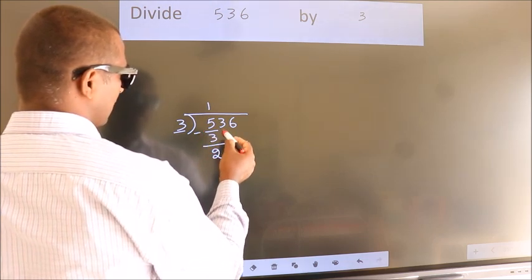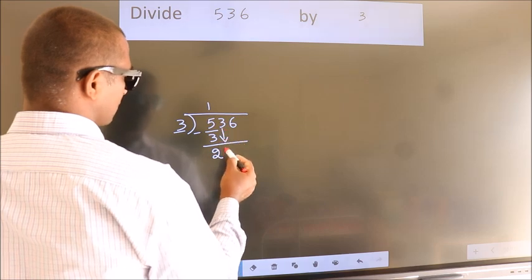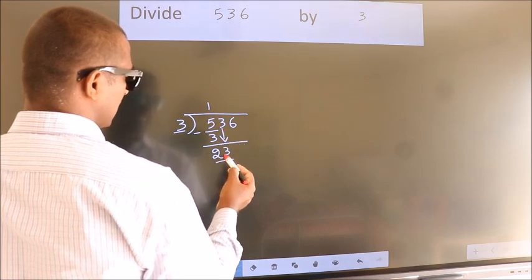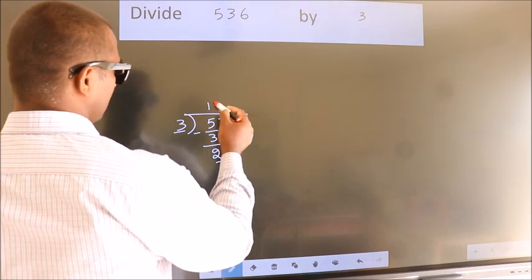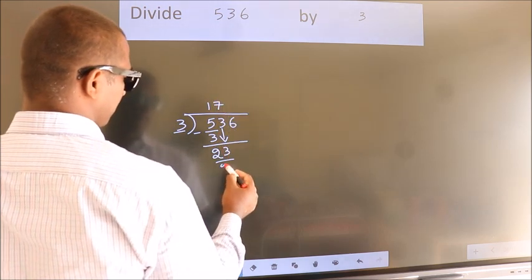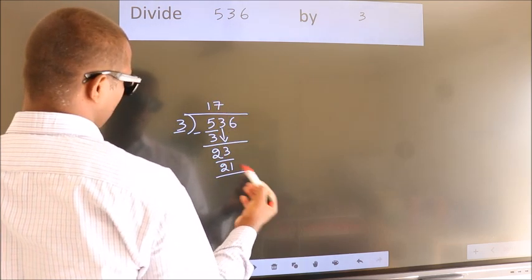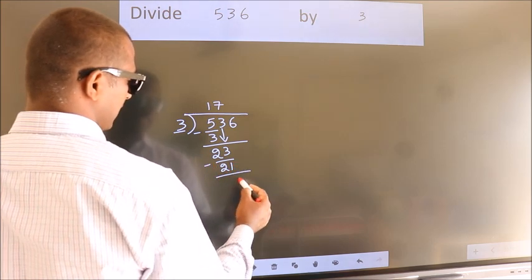After this, bring down the beside number. So, 3 down. So, 23. A number close to 23 in the 3 table is 3 7s 21. Now we subtract. We get 2.